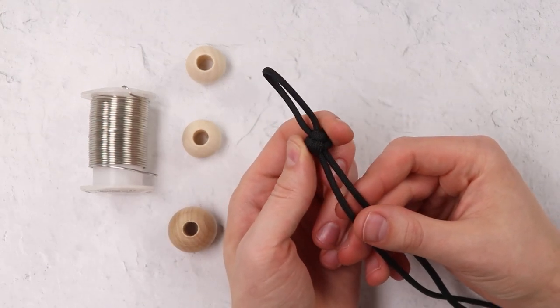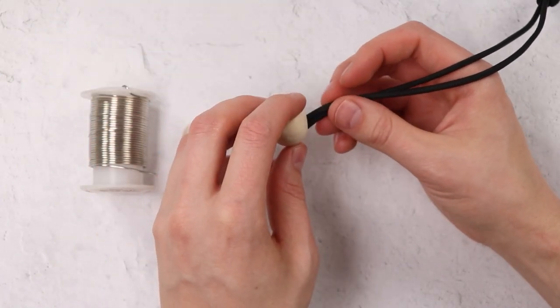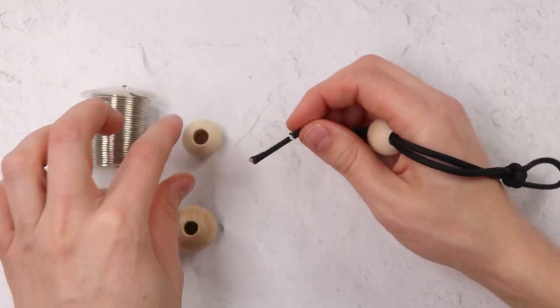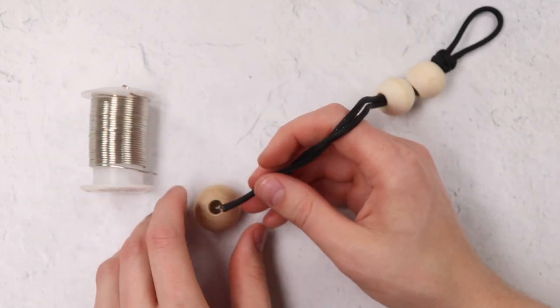Once you have whatever knot you're going to use tied, we can go ahead and thread those beads on. We'll do the two small ones first, and then that big one.